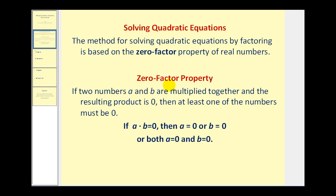If two numbers a and b are multiplied together, and the resulting product is zero, then at least one of the numbers must be zero. So if we have a times b equals zero, then a equals zero, or b equals zero, or they both equal zero.